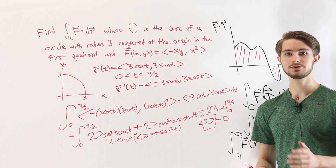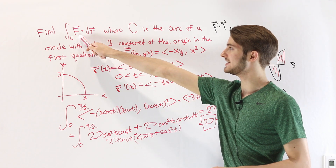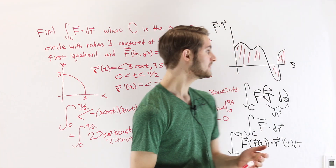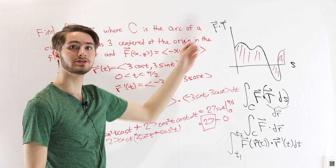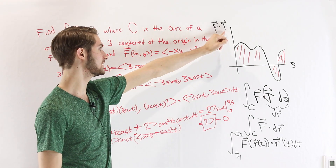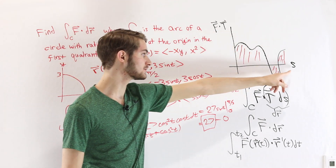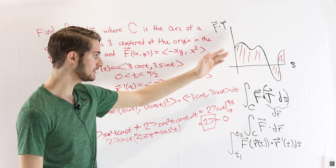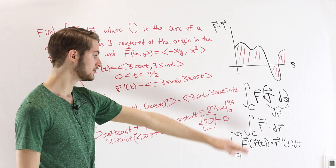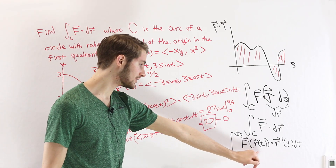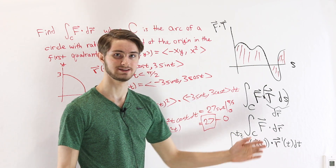So that's how we do line integrals in a vector field. The integral over some curve c of f dot dr is a measure of the component of f that is parallel to the path of c, represented by the unit tangent vector. If we take a graph of f dot T with respect to arc length and find the area, that is our vector field line integral, which we turn into the integral of f of r(t) dotted with r prime of t dt.